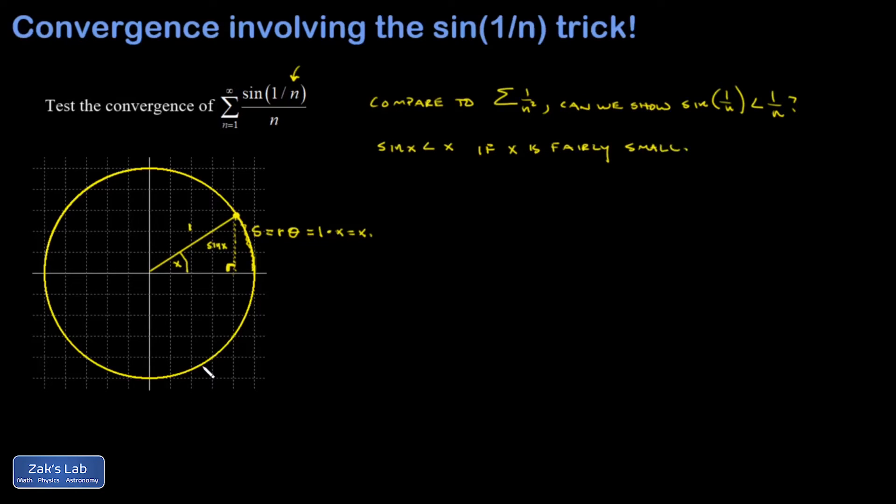All right, so all I have to do now to get what I'm after is just replace x with 1 over n. And hopefully you agree that 1 over n is fairly small. As n gets larger and larger, this thing is just a reasonably small number. All right, good. Now it's time to make my formal argument.